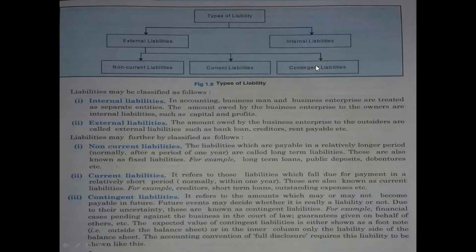Now, types of liabilities. As you can see in the chart, there are external liabilities and internal liabilities. External liabilities can be divided into three parts: non-current liabilities, current liabilities, and contingent liabilities. Internal liabilities are those owed by the business to the owners, such as capital and profits.